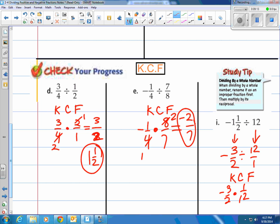We can reduce. I see 3 goes into 12 four times. Goes into itself once. Nothing else works out. We do 1 times 1 is 1. 2 times 4 is 8. A negative times a positive is a negative. There's our answer right there for -1 1/2 divided by 12.